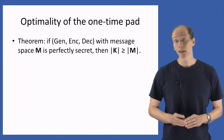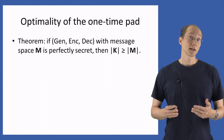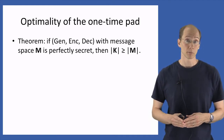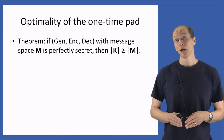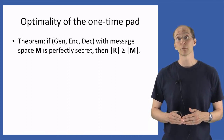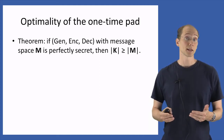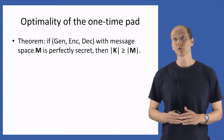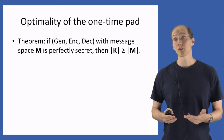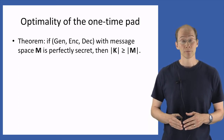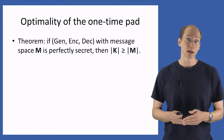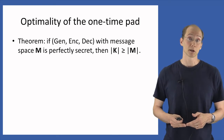I want to prove this for the particular case of key length — that is, I want to show that the one-time pad is in fact optimal, as far as perfectly secret schemes go, when it comes to the length of the key. The theorem I want to prove is the following: if we have an encryption scheme defined by algorithms Gen, Enc, and Dec, with message space M, and if that scheme is perfectly secret, then it must be the case that the size of the key space is at least the size of the message space. That means the length of the key must be at least the length of the messages that can be encrypted.